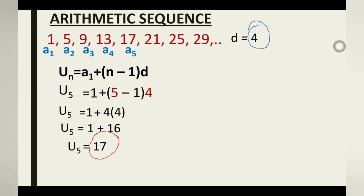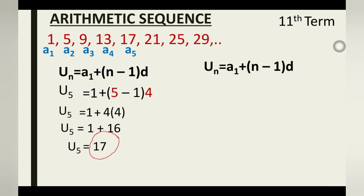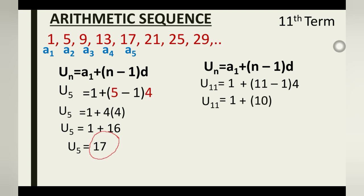With the same approach we can find other terms of the sequence instead of just adding the common difference. Let's find the 11th term of the sequence using the same formula. We substitute n = 11: a_11 = a_1 + (11 − 1) × d = 1 + (10 × 4) = 1 + 40 = 41. So a_11 = 41, and that is the value for the 11th term.